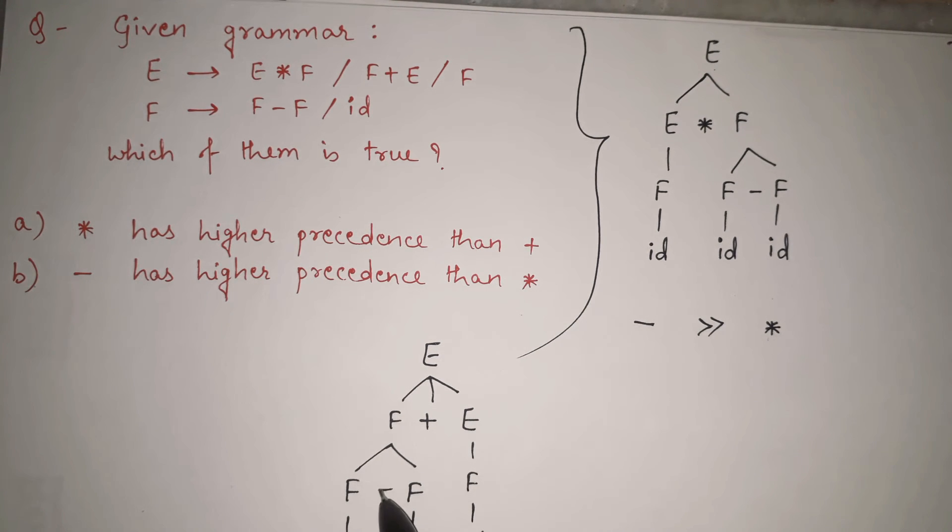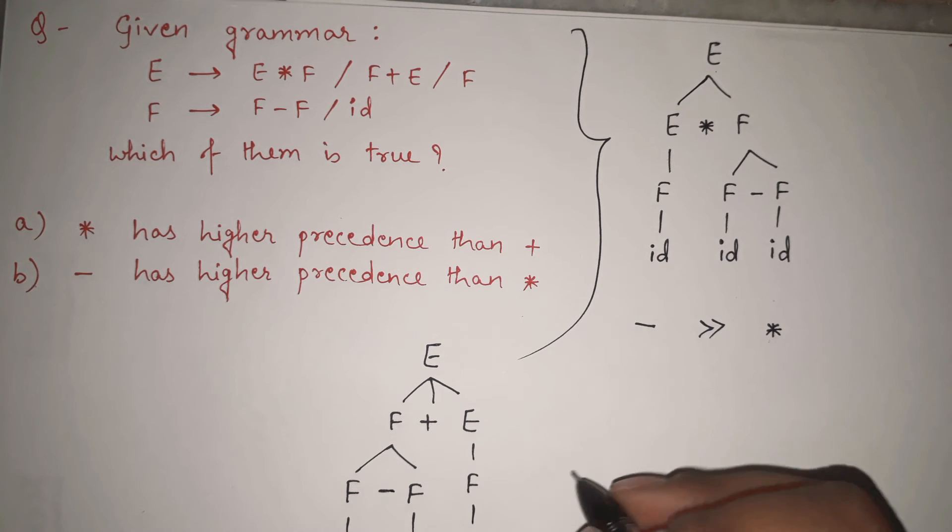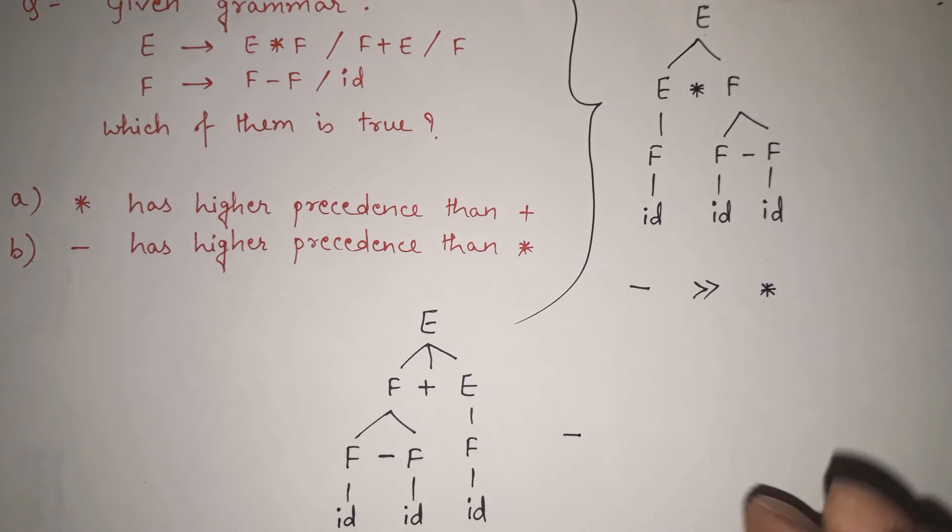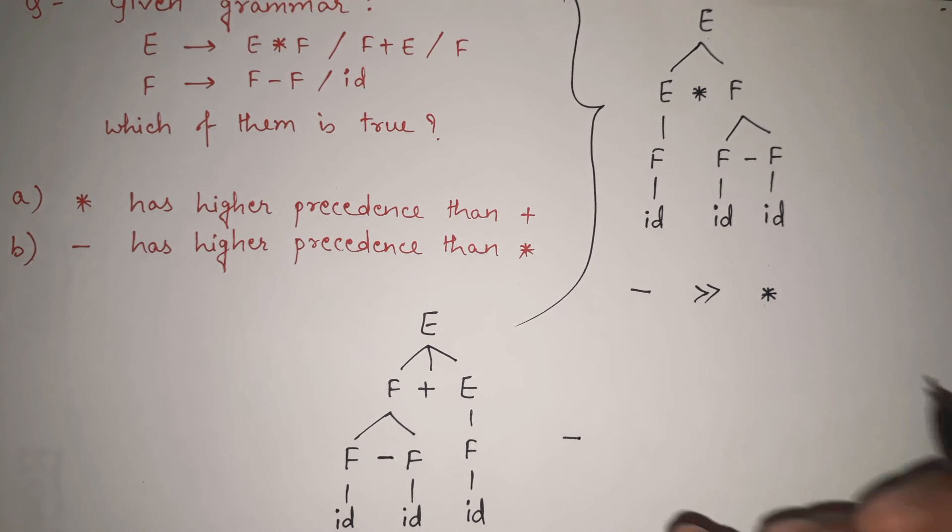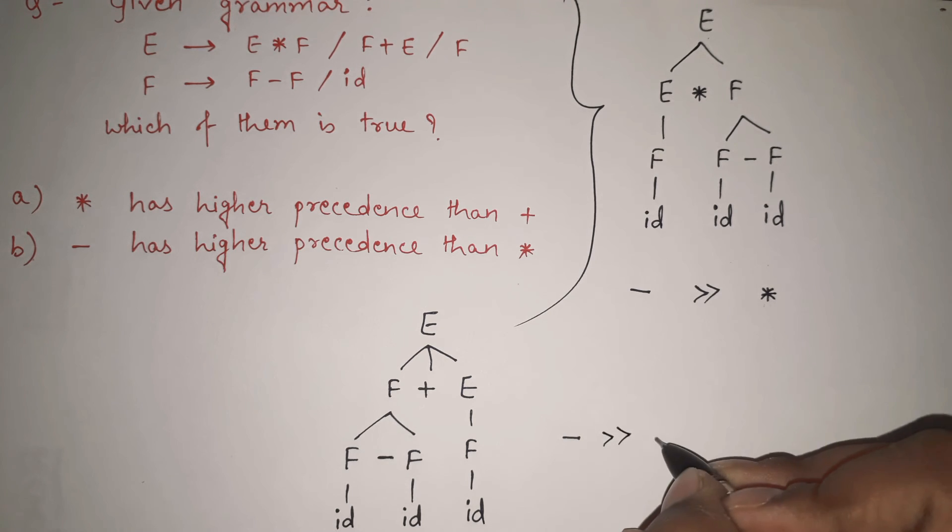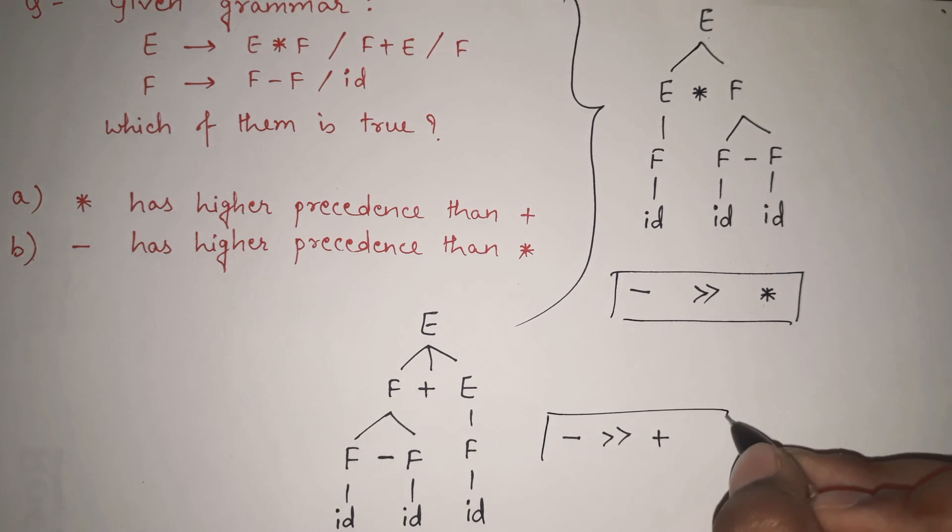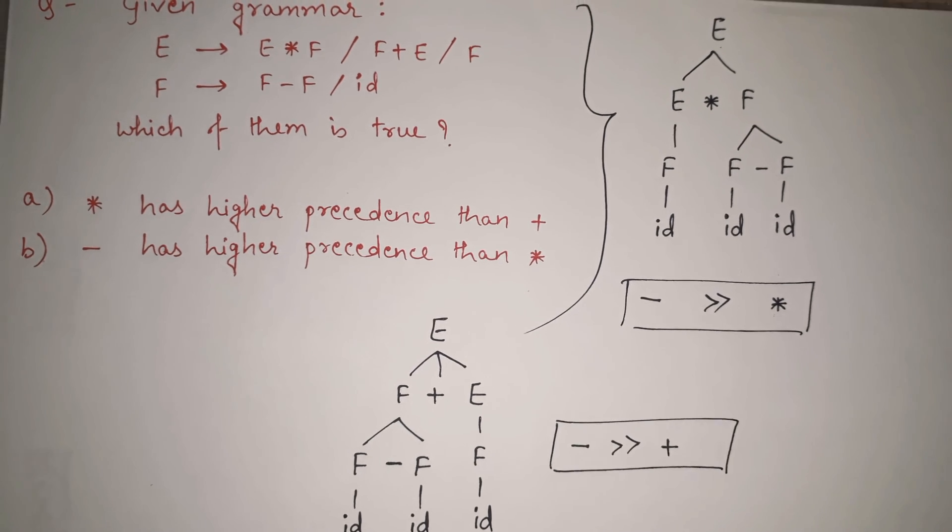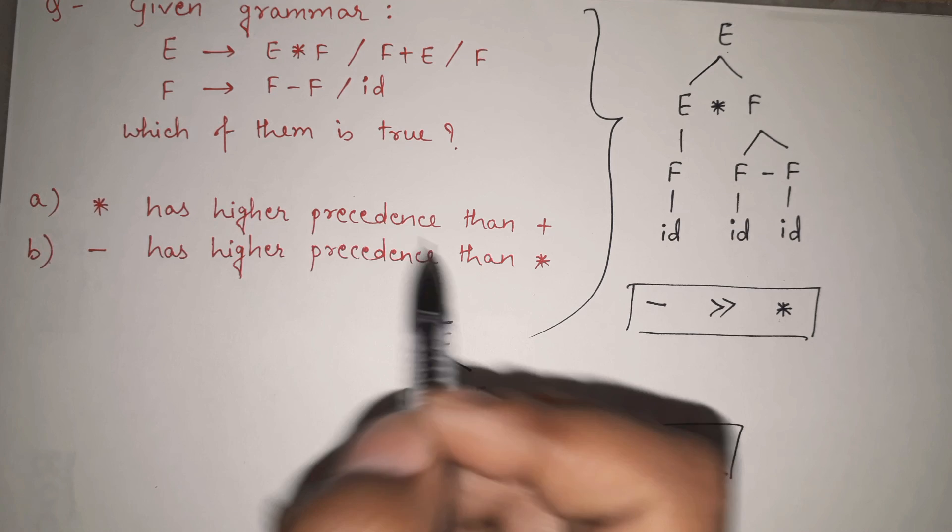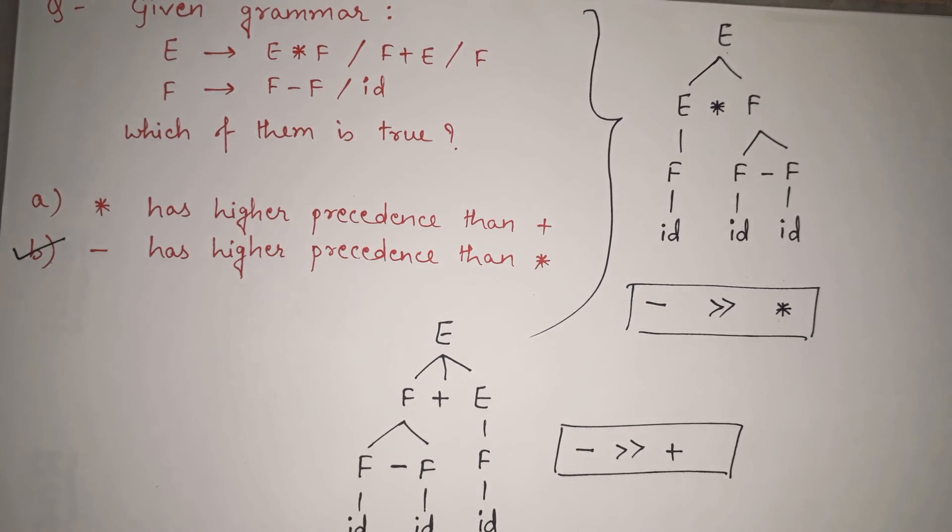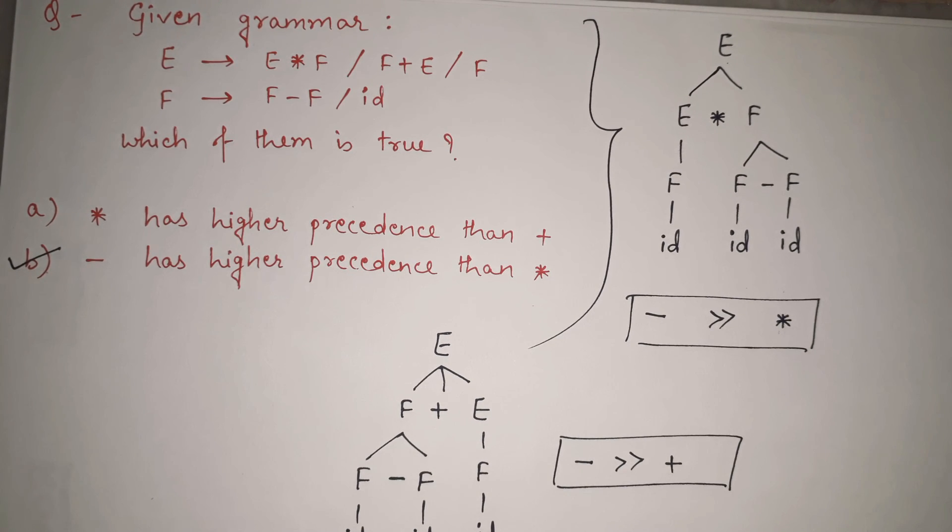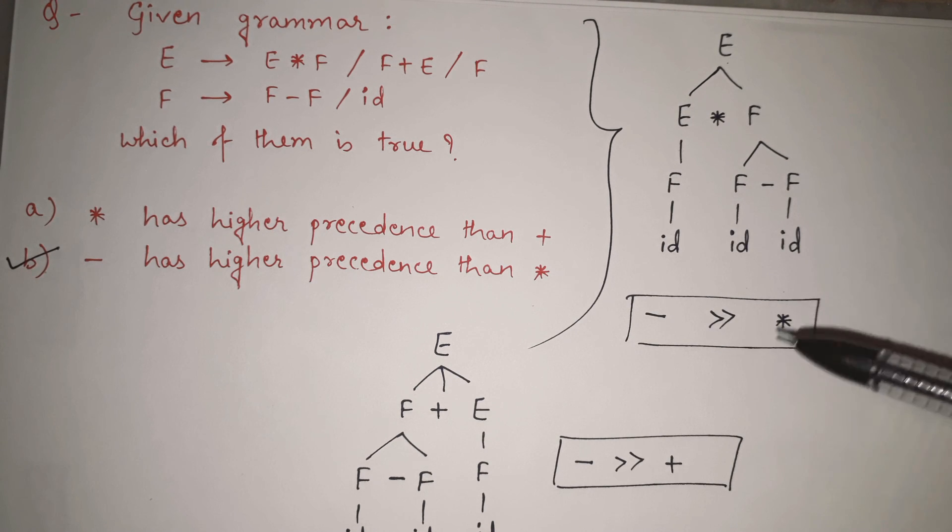So in this case also we are having that minus is having more precedence. In this case also we are having minus is having more precedence than plus. So this is the same conclusion I have got and in my option also it is possible. So I can directly say that minus is having higher precedence than star is my correct answer. So whenever any such question pops up, the only thing you have to do is draw the tree and based on the tree you can easily guess whose precedence is more. Thank you so much.